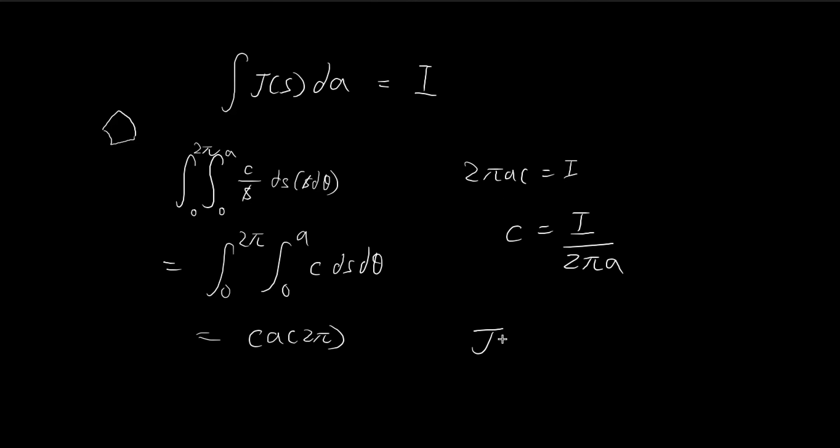And so going back to our original question, the current density, which is equal to C over S, is equal to I divided by 2πAS. So S is the variable, all these other symbols are constants. So this is the answer to part B.